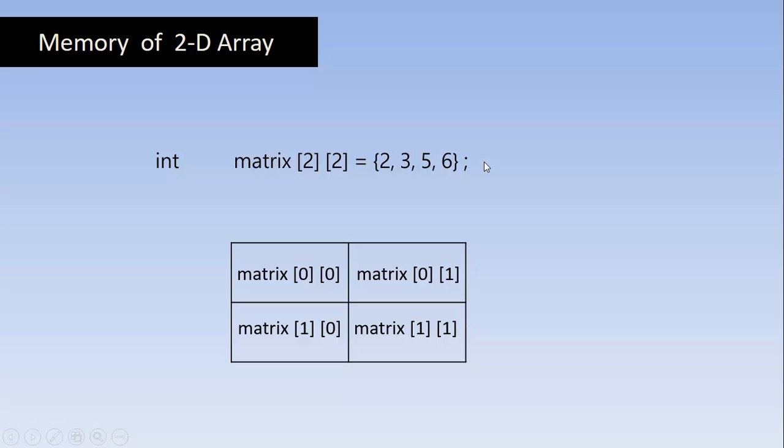So 2 comes to this place, 3 comes to this place, 5 here, and 6 here. It starts from left and starts assigning the numbers into the cells by going to right side. Now let's go and create this matrix having 2 rows and 2 columns and assign these values into that matrix by making use of 2D array.